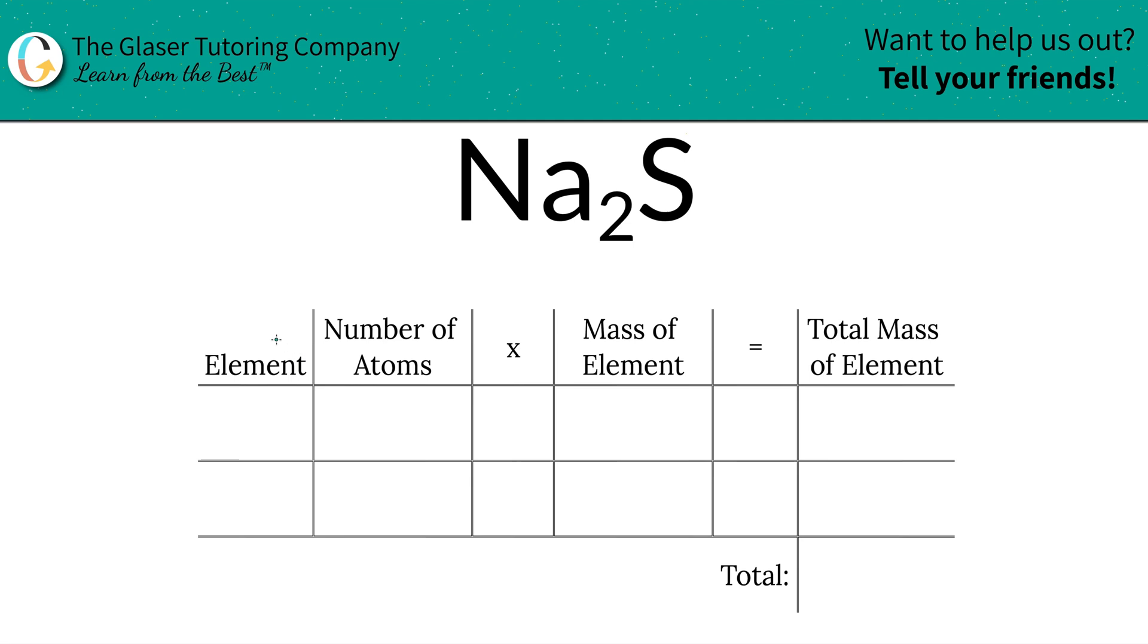So the first thing is we're going to write the elements down that we see. So we got sodium Na and we got sulfur. Next is to identify the number of atoms of each and that's where the subscripts come into play. If there's no subscript at the bottom of the element just put in a one. That means we've got two sodium, one sulfur.